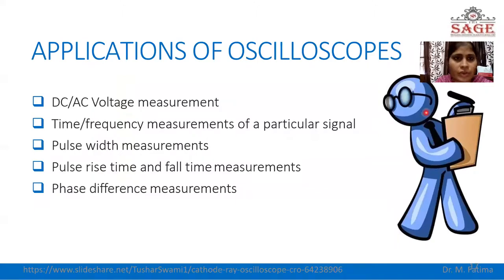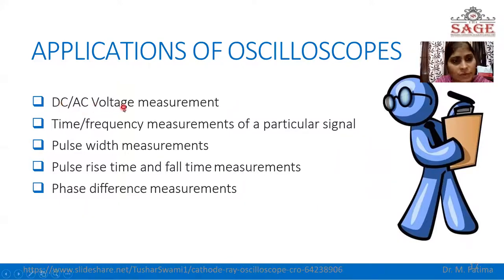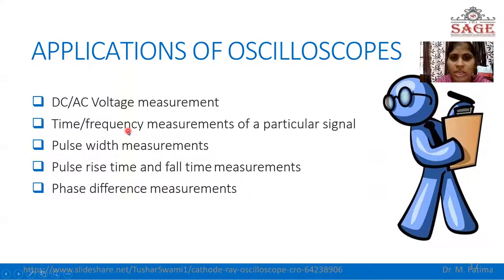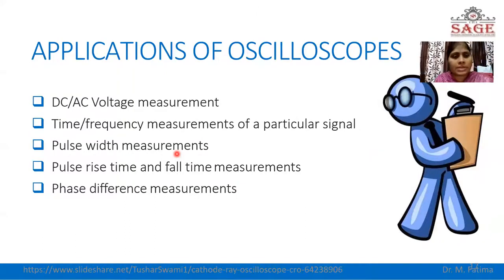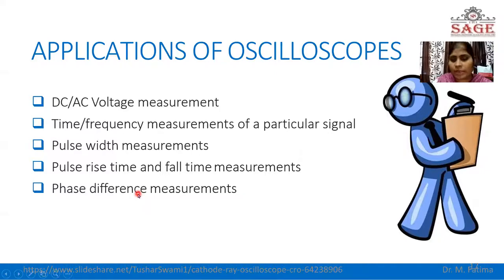These are the applications of the oscilloscope. The oscilloscope is used for the measurement of DC or AC voltage, or for amplitude measurement. It is used for measurement of time period and indirect measurement of frequency. Pulse width, pulse rise time, and fall time can also be measured. The phase difference between two signals can be measured if both signals are given to the CRO simultaneously.